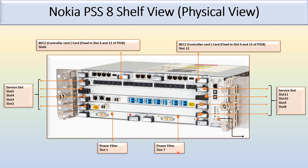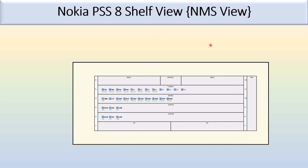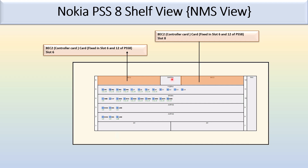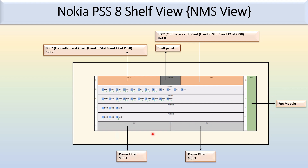Slot 1 and slot 7 are fixed for the power filter card, and this is fixed for the fan module. This is the shelf panel. In the NMS view, these two slots are fixed for the controller card — slot 6 and slot 12. This is the shelf panel in between the EC2 card, and this is the fan module.